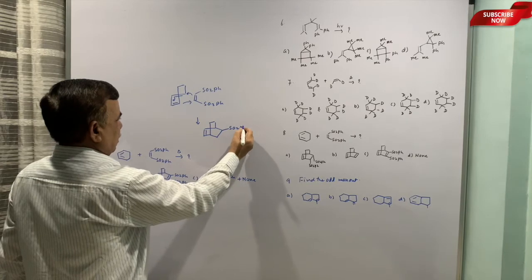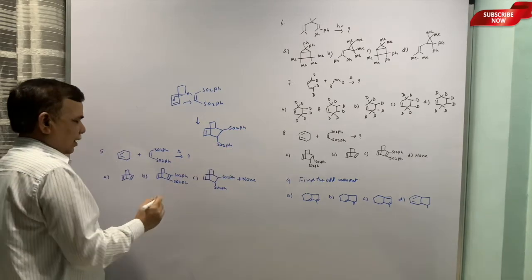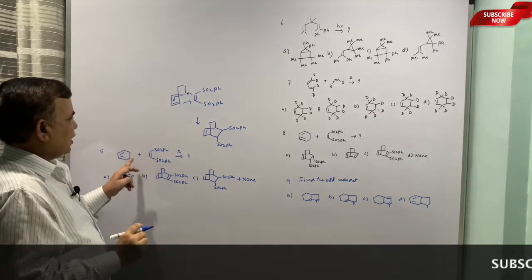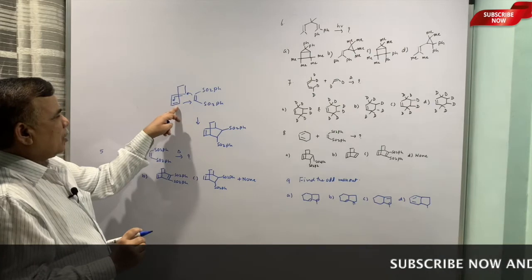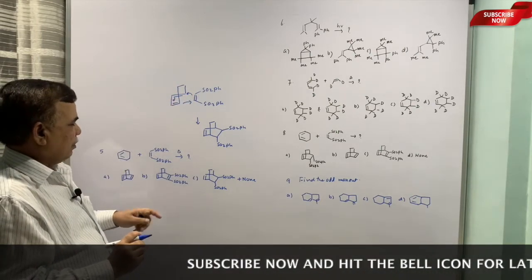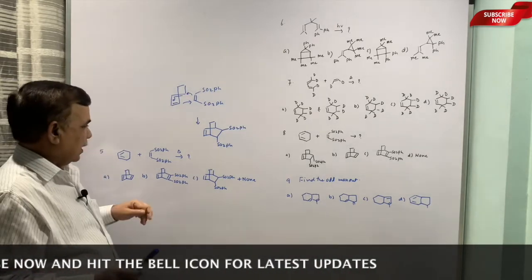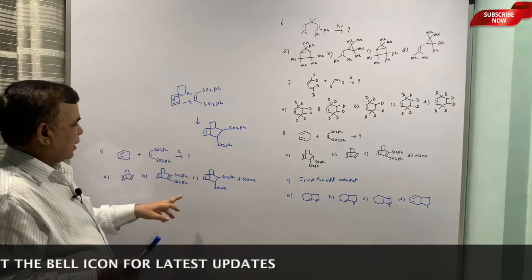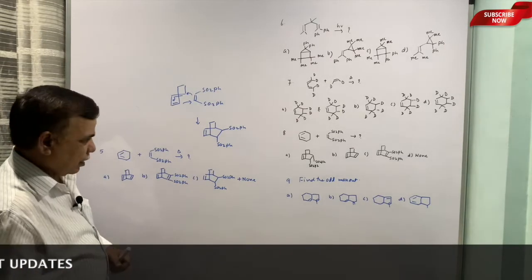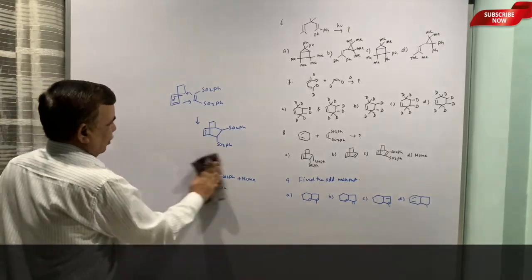So this is fine, double bond is there everywhere, but we cannot have double bond in the second ring. This is wrong because that double bond is utilized in constructing the sigma bond here. Similarly this is shifting here, so two sigma bonds are constructed at the expense of two pi bonds and then only one is retained in the product. So this is going to be the correct option.